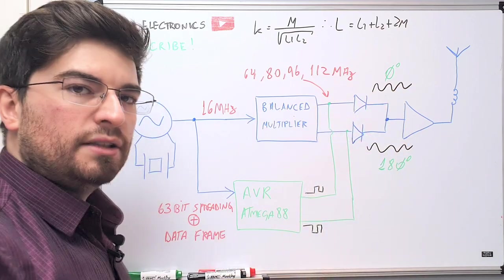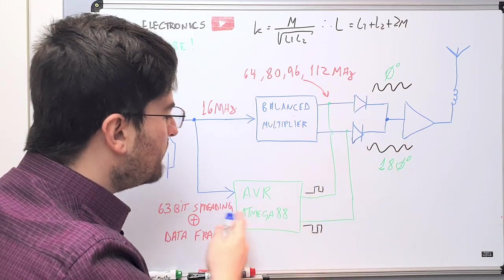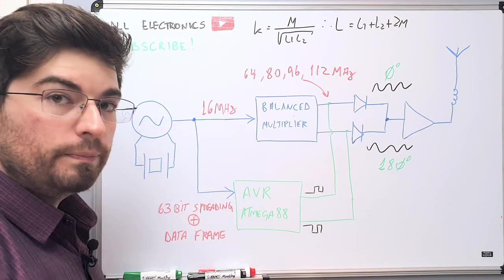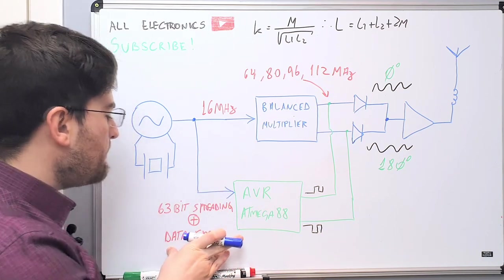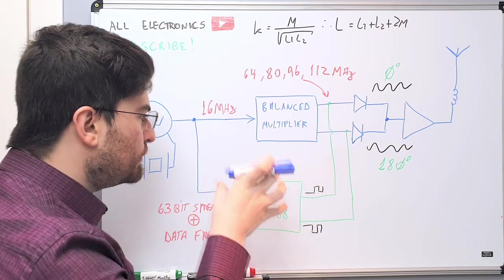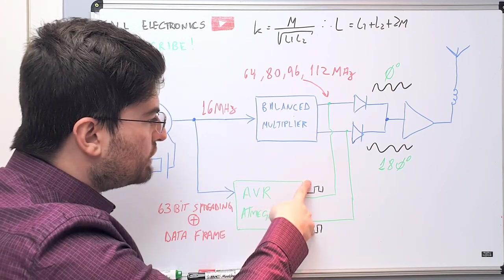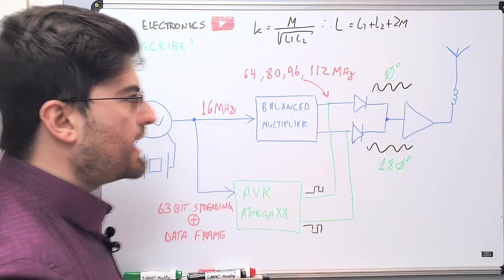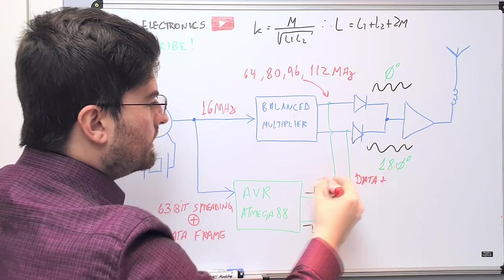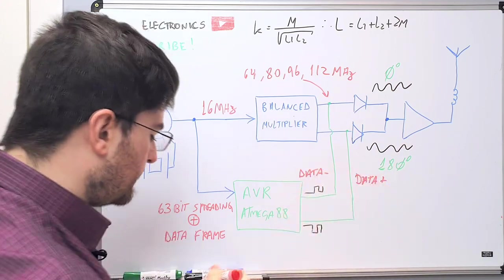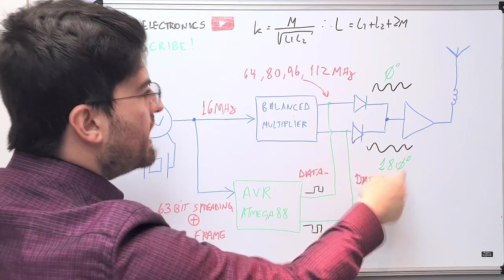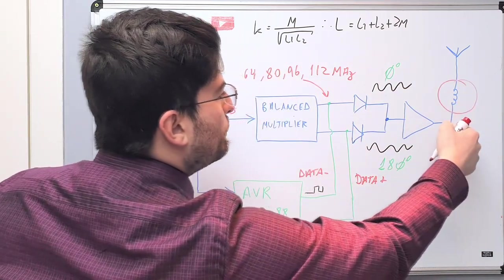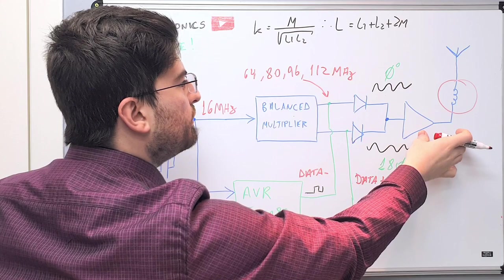The signal is amplified and goes to the antenna. The two diodes are used as radiofrequency switches controlled by this AVR ATmega88 microcontroller. The microcontroller has in its memory the 63-bit spreading code, a table, and it encodes the data frame with the spreading sequence in software. We only need to generate two signals to turn on and turn off the two diodes, choosing which phase will be outputted to the antenna. I'm calling this signal data plus and this one data minus. When the bottom diode is switched on we have one phase; when the upper diode is switched on we have the other phase.